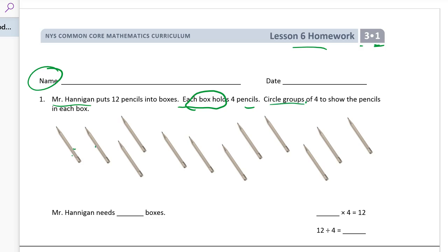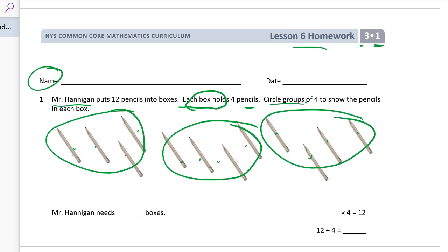Circle groups of 4 to show the pencils in each box. So we've got 1, 2, 3, 4 pencils here, circle them. 1, 2, 3, 4 pencils here, circle them. 1, 2, 3, 4 pencils here, circle them. Mr. Hannigan needs 1, 2, 3, 3 boxes.